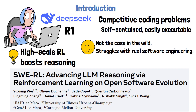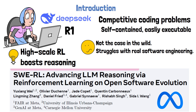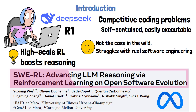Today, we're reviewing a new paper from Meta, which is a natural follow-up to DeepSeek R1. The paper is titled SWERL: Advancing LLM Reasoning via Reinforcement Learning on Open Software Evolution. This paper proposes a way to scale reinforcement learning for real-world software engineering by training models on how open source software evolves over time.